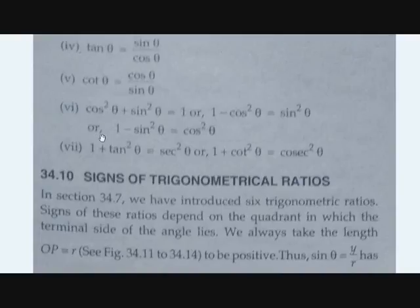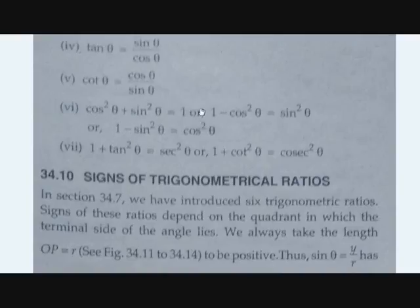You can derive this easily. Cos means base by hypotenuse, and sine means perpendicular by hypotenuse. If we square those, we get base squared by hypotenuse squared plus perpendicular squared by hypotenuse squared. Since the bases are equal, we add to get base squared plus perpendicular squared all over hypotenuse squared. By Pythagoras' theorem, base squared plus perpendicular squared equals hypotenuse squared, so the result is 1. Therefore, cos squared theta plus sin squared theta equals 1.